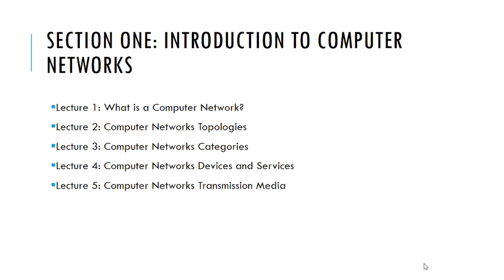Let us now move to the sections of this course. Section 1 is Introduction to Computer Networks. The first lecture answers the question of what is a computer network. The second lecture covers the topologies used in computer networks. The third lecture is about the categories of computer networks. And the fourth lecture is about the devices used in computer networks.